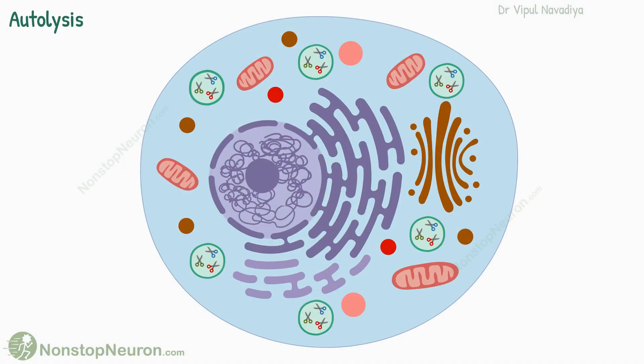Now let's talk about autolysis. It is like a more aggressive version of autophagy. Sometimes the cell gets damaged by trauma, heat, cold, or chemicals.